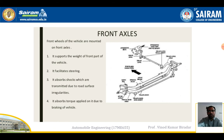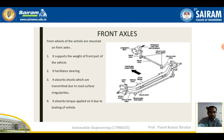The front wheels of vehicles are mounted on the front side, and that assembly is called the front axle. The main function of the front axle is to support the weight of the front part of the vehicle, facilitate the steering system, absorb shock while the vehicle moves on irregular roads, and also absorb the torque applied due to braking of the vehicle.